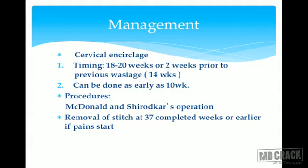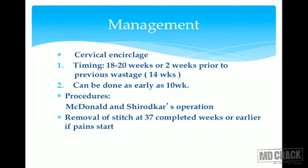In Shirodkar's procedure, the material used is muslin tape. More dissection is required as this is more physiological — a transverse incision is made at the cervicovaginal fold, bladder is separated and pushed upward, a posterior incision is made, and the muslin tape is placed around the cervix as close to the internal os as possible with the knot tied posteriorly. McDonald's is easier to perform with less dissection; Shirodkar's is more physiological and effective but involves more dissection and blood loss.